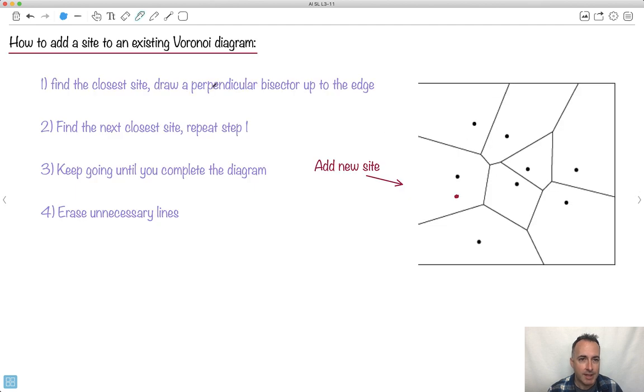All right. Let's do how to add a site. I've seen textbooks and instructions. They're very, very complicated to understand. I thought a video was a great place to show you how to do this. So you need to know how to be able to add a site to an existing Voronoi diagram. See, the idea would be, pretend this red one isn't there.